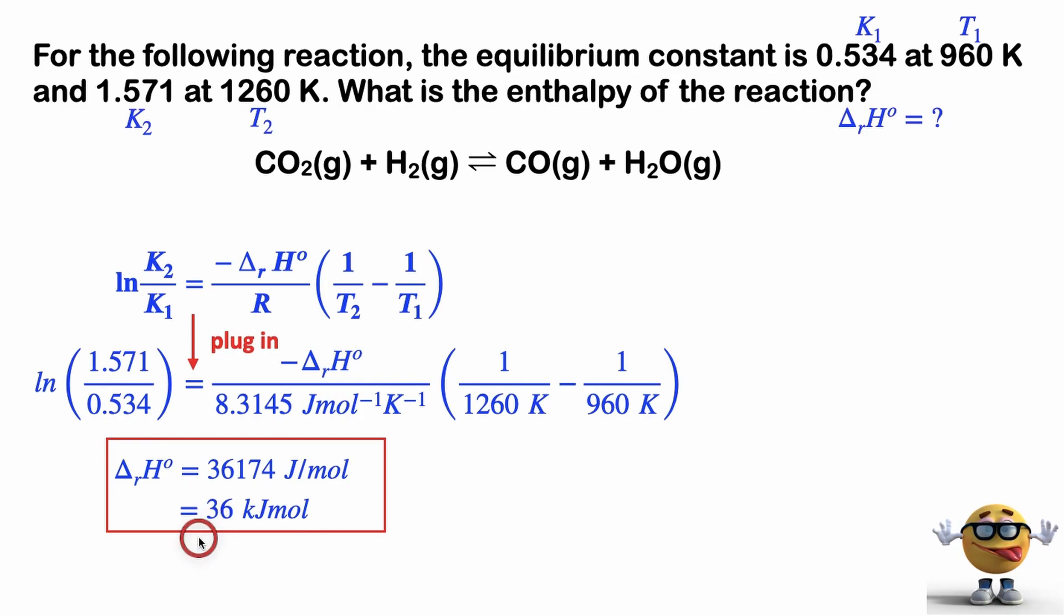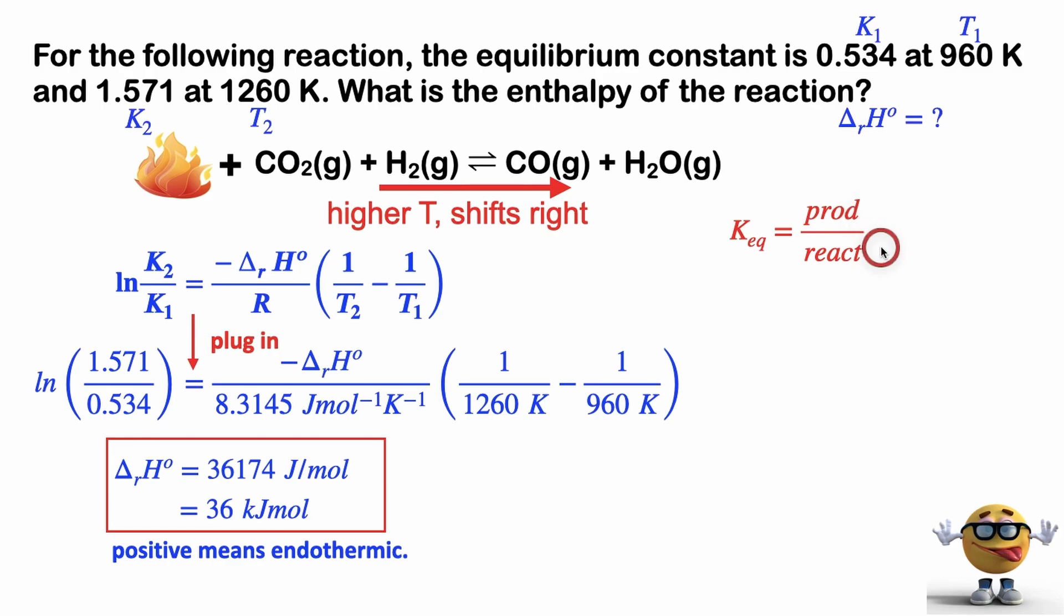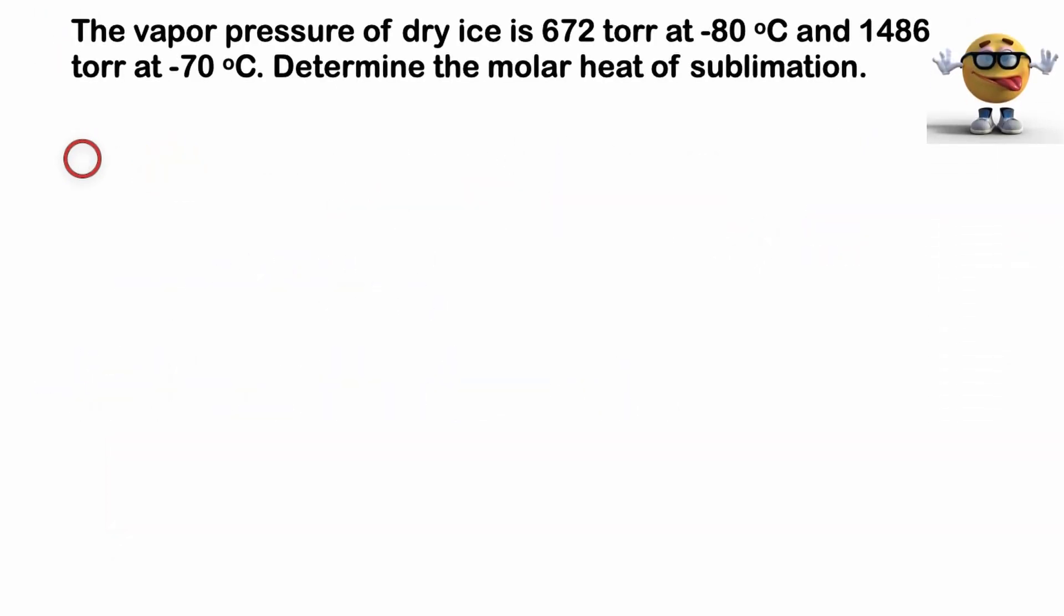And note that this is a positive number, so you may be asked to explain if the answer makes sense. Positive means it's endothermic. So what's happening is energy drives the reaction to the right. Therefore, higher temperature shifts this to the right. The equilibrium constant is products over reactants, so we'll have more products, less reactants. K will go higher if we increase the temperature, which is what we're seeing here.